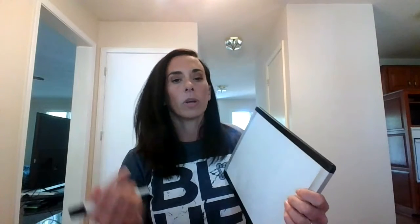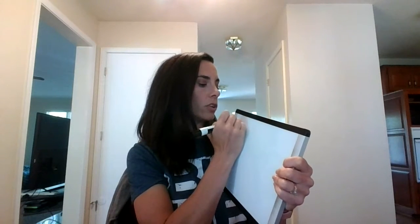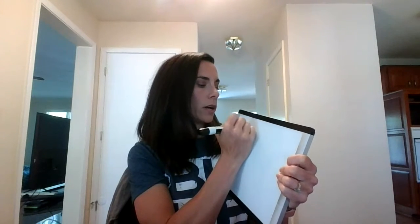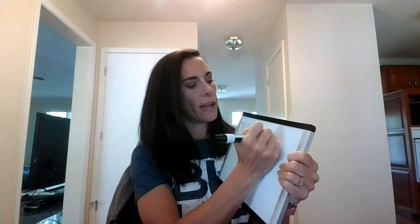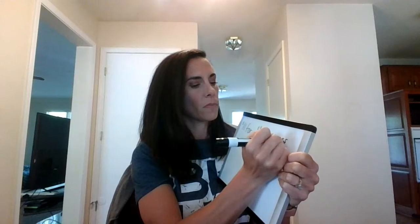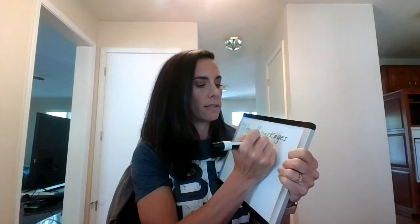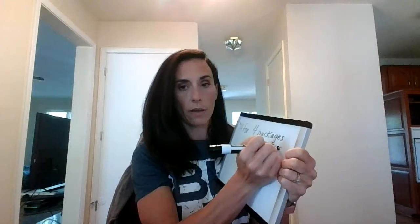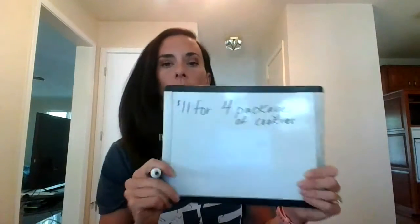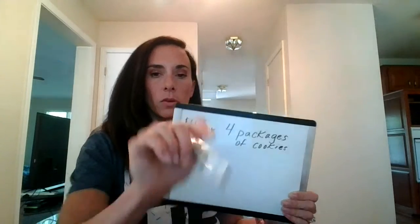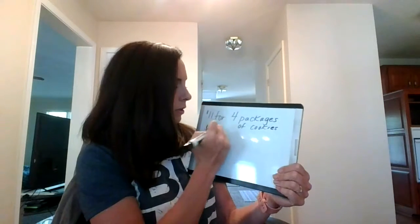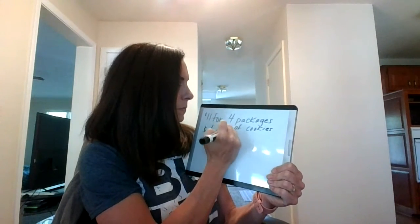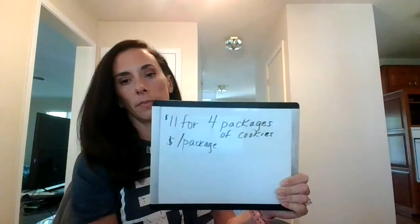Remember, to find unit rate, we're going to divide. In our example, we have mom spent $11 for four packages of cookies. That's on the Google Slide, so if you don't have that pulled up, pause and pull it up so you can follow along — just have the video and the Google Slide side by side. Essentially what we're looking for is how much money per package of cookies.